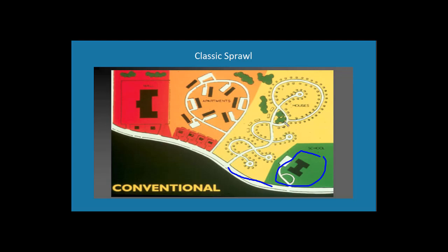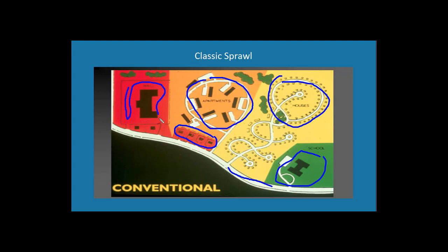There's segregation between apartments in one spot and houses in another — economic segregation and probably some racial segregation too. Any business has to be located on the main artery for visibility. You have the mall with lots of space devoted to parking, and it's hard to walk to because of how it's set up. So: segregation by function, segregation by income, a main artery, and not enough secondary roads.